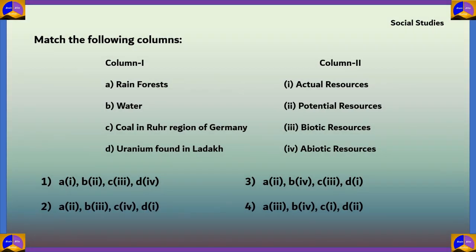The last question in this set is from social studies: match the following columns. Column 1 has: rainforests, water, coal in the Ruhr region of Germany, and uranium found in Ladakh. Column 2 has: actual resources, potential resources, biotic resources, and abiotic resources.